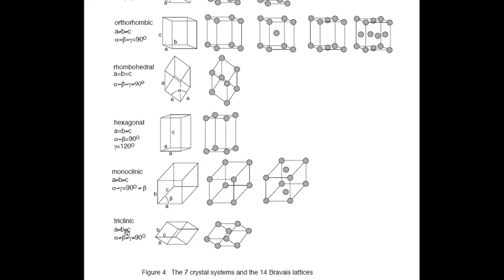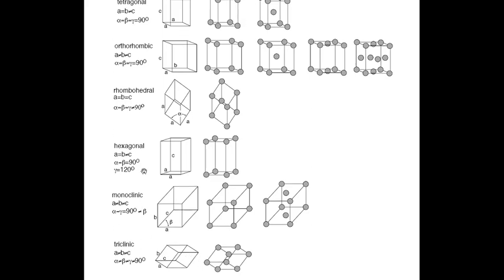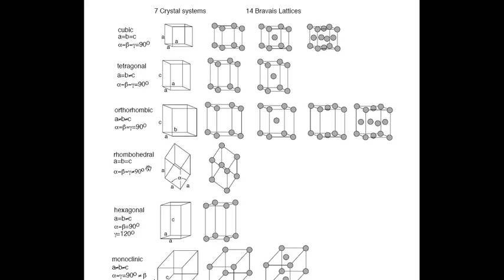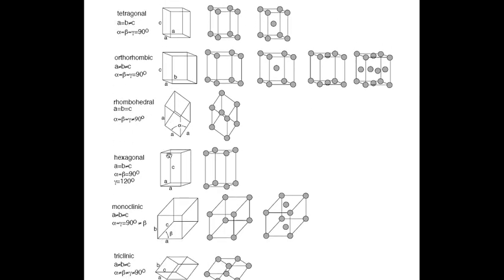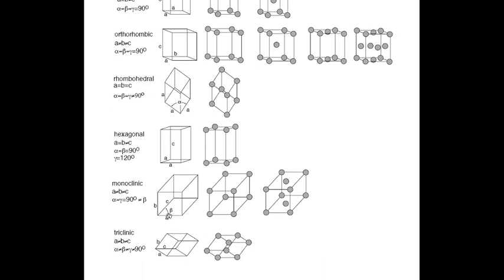The triclinic system: A is not equal to B, which is not equal to C, and alpha is not equal to beta, which is not equal to gamma, which is not equal to 90 degrees — all three sides and all angles are different. This is totally unsymmetrical. The cubic system is the highest symmetry, and the triclinic is totally unsymmetrical.